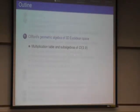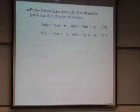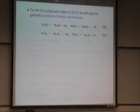Now the multiplication table and subalgebras of this algebra, the Clifford algebra of three-dimensional space. We have to get the full multiplication table of all elements, still to compute the products of vectors and bivectors, and this is done here, and here, and here.